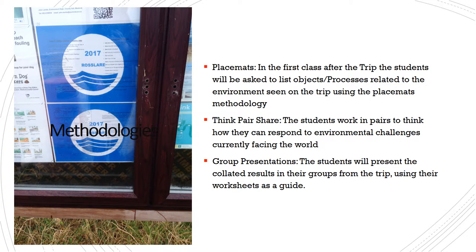There are three main methodologies chosen to go along with this urban field study. These include placemats. Placemats will be done in the first class after the trip and will be used to help students collate their information. They will be put into groups and given certain headings, under which they will list all the information gathered on the field trip, then collate and put this information together to give a concise summary.